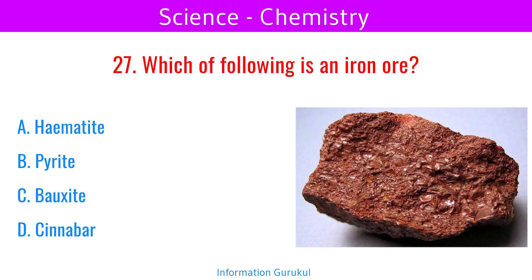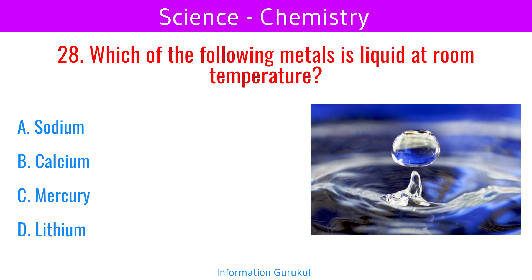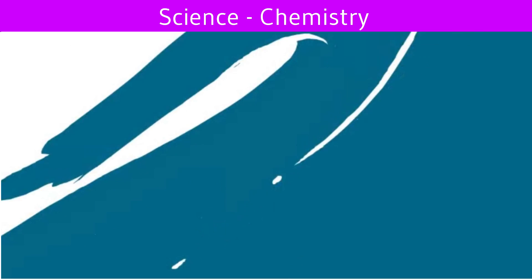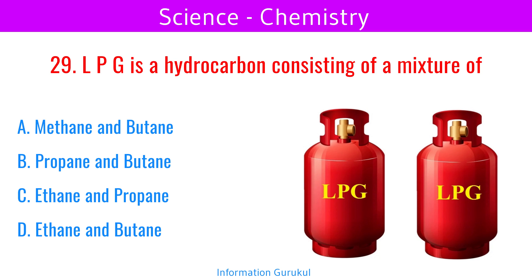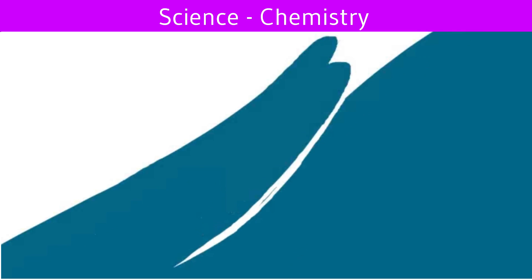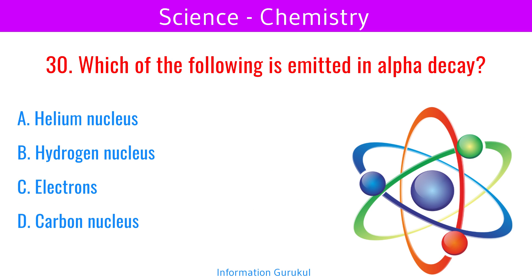Which of the following is an iron ore? Hematite. Which of the following metals is liquid at room temperature? Mercury. Which of the following is emitted in alpha decay? Helium nucleus.